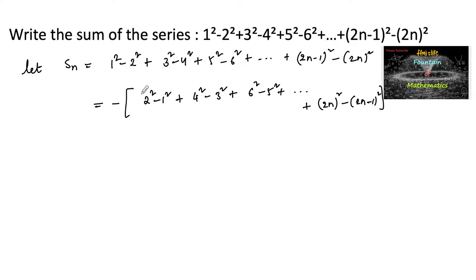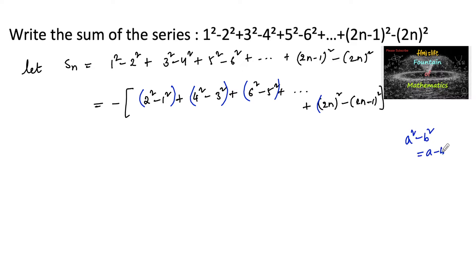So let us keep the brackets pair-wise. Each pair is in the form of a² - b², and we know that a² - b² = (a - b)(a + b).